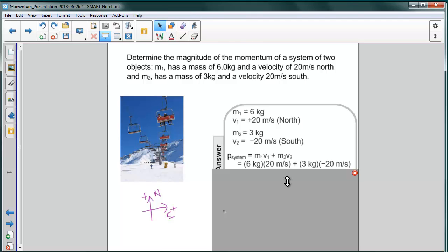So if we do the math, we have 120 kilogram meters per second moving to the right, and we have negative 60, that's 3 times negative 20, kilogram meters per second moving to the left. If we add these together, we get 60 kilogram meters per second.